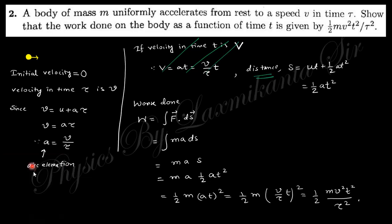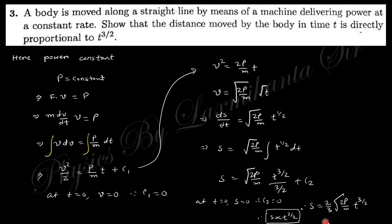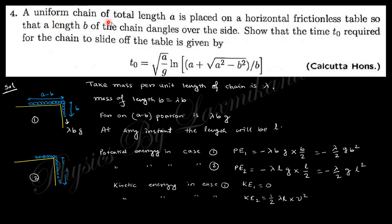Question three: a body is moved along a straight line by a machine delivering power at a constant rate. Show that the distance moved at time t is directly proportional to t to the power 3/2. Since power P = F·v = m·(dv/dt)·v, integrating gives v² = 2Pt/m. Since v = ds/dt, rearranging and integrating gives displacement s proportional to t^(3/2).